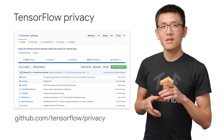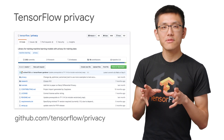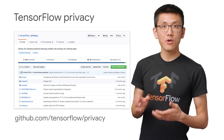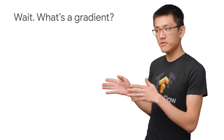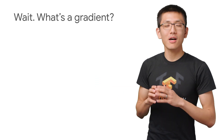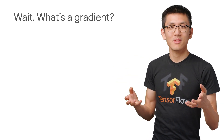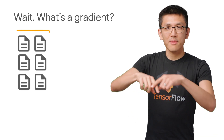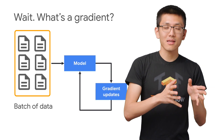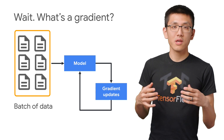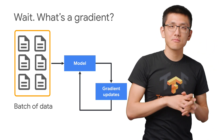So what's happening under the hood? In order to ensure that no single example can impact the final trained model, TensorFlow Privacy introduces some modifications to the way that gradients are calculated during training. Gradients express which direction and how far a model should update its internal state — represented by weights and biases, a large matrix of numbers. During a single training step, we use a batch of data to determine the gradient and then apply it to update the weights.